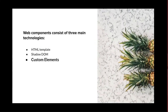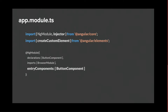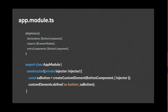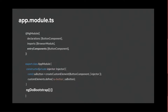For the custom element, we need to register it in our NgModule. First, we import createCustomElement. We remove any bootstrapping of the app component, and tell the NgModule that our entry component is the button component. Then while exporting the class, we use the createCustomElement method to define the custom element by giving it a name and a selector. Then we bootstrap it all up and that's it.